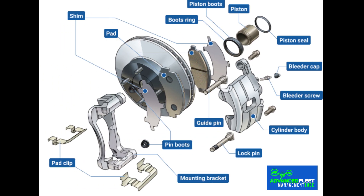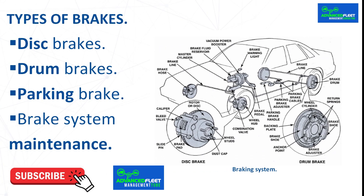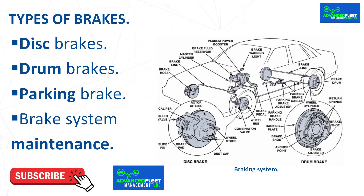Disc brakes. Predominant in most modern vehicles, disc brakes are noted for their ability to quickly dissipate the heat generated by friction. Because the discs rotate with the wheels and the pads press down on them, the vehicle's speed is reduced. The main advantages include improved heat dissipation, which reduces the risk of failure due to overheating; easy inspection and maintenance, as components are easily accessible; and increased durability compared to older systems such as drum brakes.